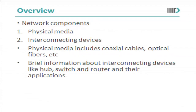In this module we will learn about the various network components, i.e. the physical media and the interconnecting devices. The physical media includes coaxial cables, optical fibers, twisted pair cables, etc., while the interconnecting devices include hubs, switches and routers. We will talk about the level of intelligence we use and how they actually function.